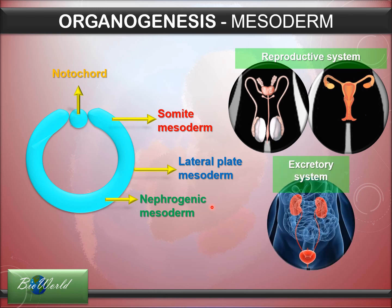The circulatory system — including the blood circulatory system and the lymphatic system — develops from the nephrogenic mesoderm. The reproductive system and excretory system also develop from the nephrogenic mesoderm. A simple way to remember: the excretory system involves the kidneys, which have nephrons — hence 'nephrogenic' mesoderm.